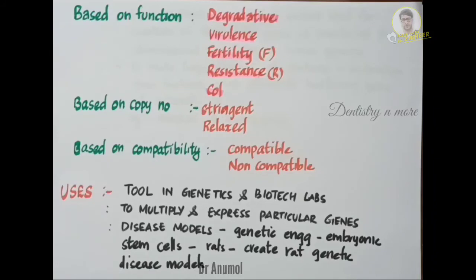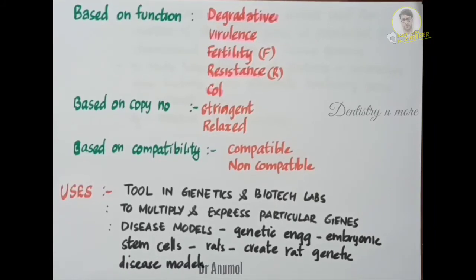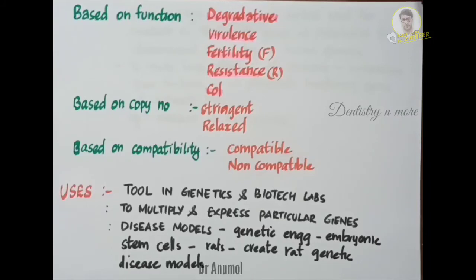Next are fertility plasmids — they contain TRA genes, are capable of conjugation, and result in the expression of sex pili. Example: F plasmid of E. coli. Next are resistance or R plasmids — they contain genes that provide resistance against antibiotics or poisons. Historically, they are known as R factors.